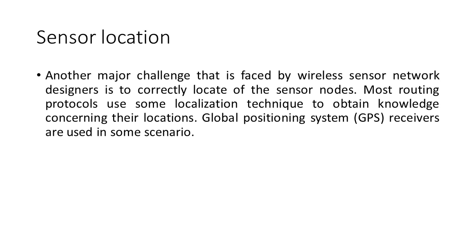The seventh design challenge is sensor location. A major challenge faced by wireless sensor network designers is to correctly locate sensor nodes. Most routing protocols use localization communication techniques to obtain knowledge about their locations. Global Positioning System (GPS) receivers are used in some scenarios.